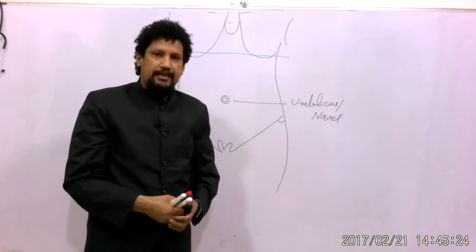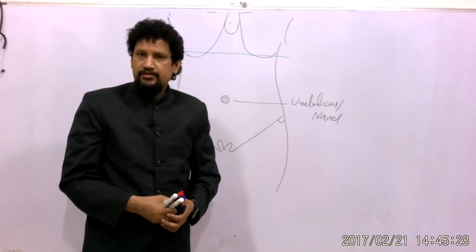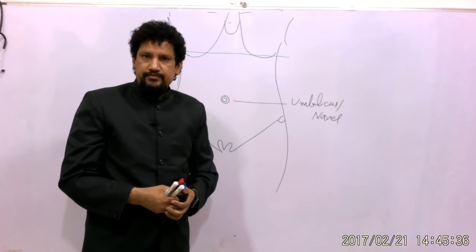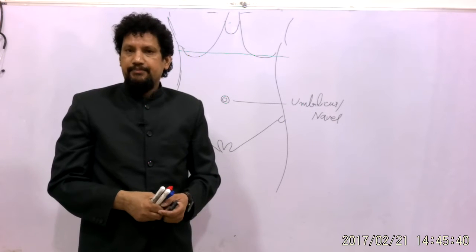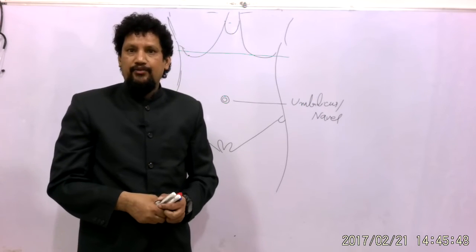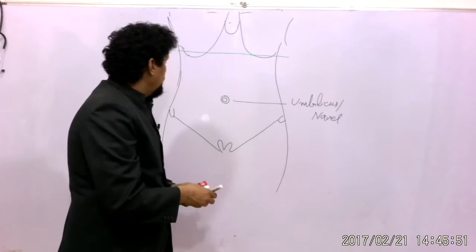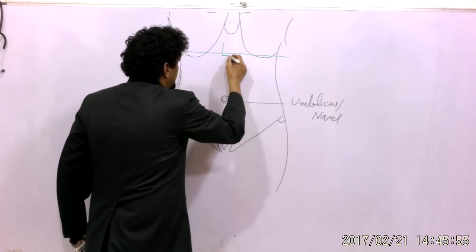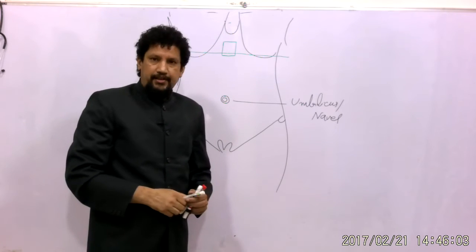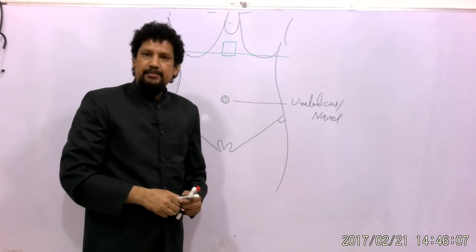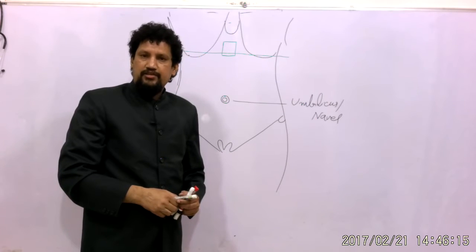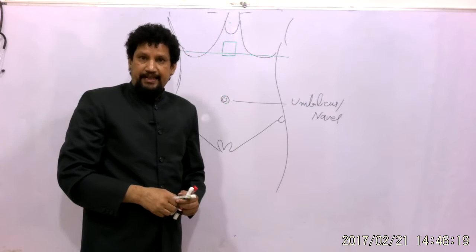Structures at the transpyloric plane include the pylorus of the stomach, the fundus of the gallbladder, the right hepatic flexure of the colon, and the ending of the spinal cord. This plane passes through the lower border of the L1 vertebra. The celiac trunk supplying the foregut and the superior mesenteric artery are also situated at approximately this level.